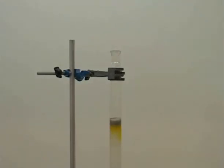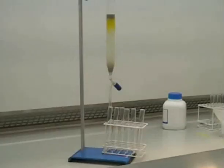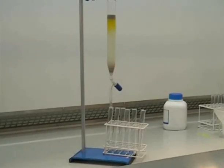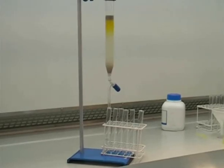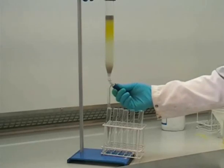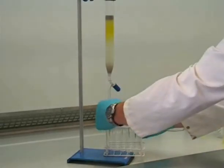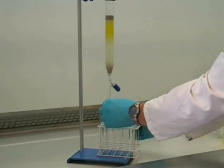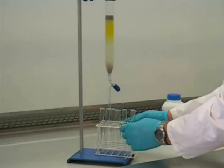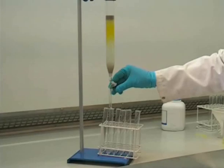And we're now ready to run our column. So we open the tap at the bottom of the column and this allows us to collect our first fraction. In this case we're collecting the fractions in test tubes. But depending on the size of your column, you may use sample vials or even conical flasks. Once collection is complete, we can close the tap momentarily to move on to collect fraction number 2. This process can be repeated any number of times to collect as many fractions as are required.